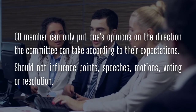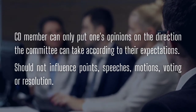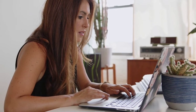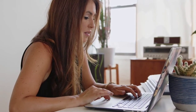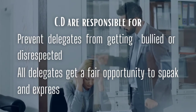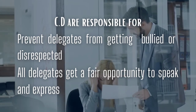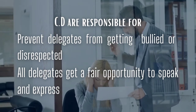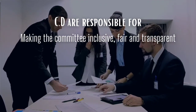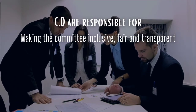Such areas are out of bounds for Committee Dais members and should be decided entirely by the delegates, although the opinion of a Dais member is respected under the code of conduct. A Committee Dais member should also not be isolated from the committee proceedings — they should constantly monitor and ensure rules of procedure are not broken. They should make sure delegates with less knowledge or experience are not bullied or disrespected in formal or informal sessions, and that all delegates get a fair opportunity to speak. The Committee Dais should focus on making the committee highly inclusive, fair, and transparent, ensuring that every participant has something to take back from the conference.